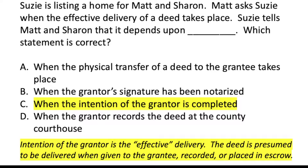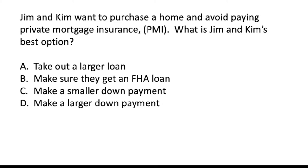It's kind of a trick question — you have to read carefully. Jim and Kim want to purchase a home and avoid paying private mortgage insurance. What is their best option? Take out a larger loan, get an FHA loan, make a smaller down payment, or make a larger down payment? Private mortgage insurance insures the lender that if they make you a loan and you default, they won't be out any money.